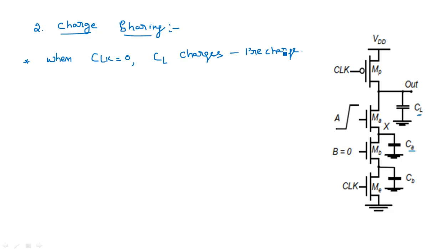There are two operations: the pre-charge phase, which is the capacitor charging phase, and the evaluation phase, which is the discharging phase. When the clock equals 0, the MP transistor comes into the ON state and the capacitor charges, as there is a current path from VDD through MP to CL. Now assume another condition where the clock equals 1.